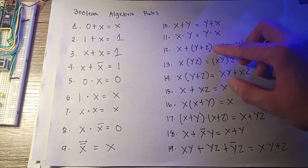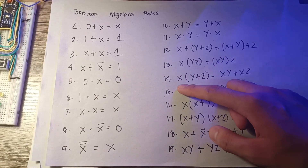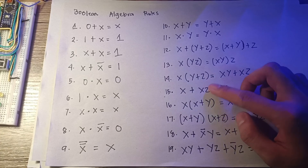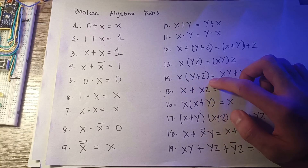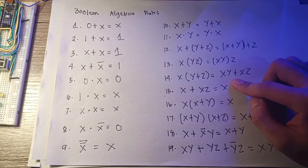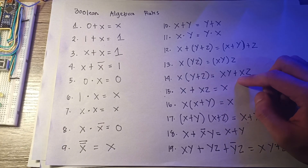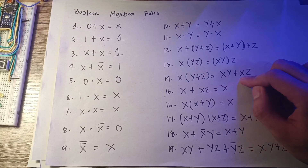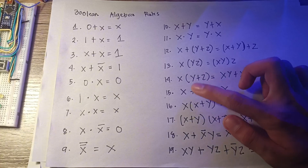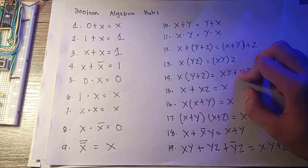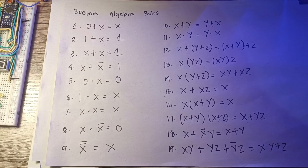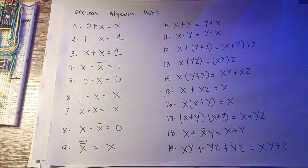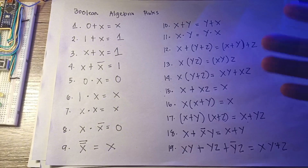We have the commutative laws and the associative laws. Rule 14 is the distributive law, which states that the product of a monomial x multiplied by a polynomial y plus z equals the sum of the products of the monomial multiplied by each term of the polynomial — x, y, z. The three laws — commutative, associative, and distributive — may be extended to include any number of terms.